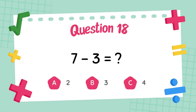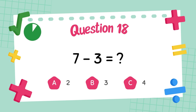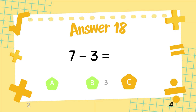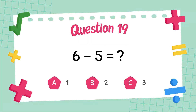What is 7 minus 3? The answer is 4. What is 6 minus 5?